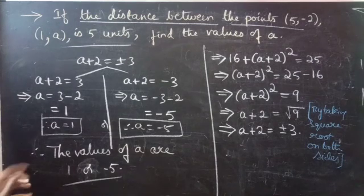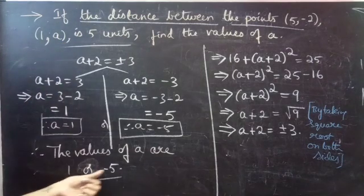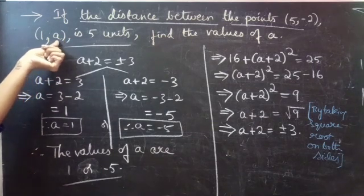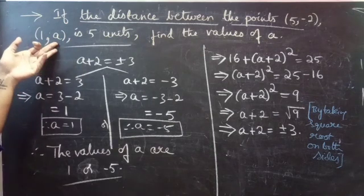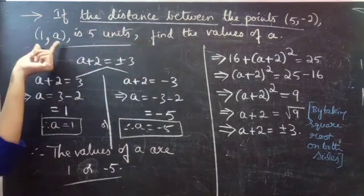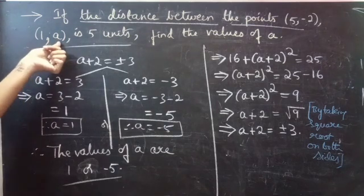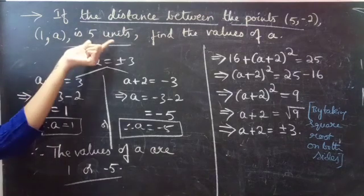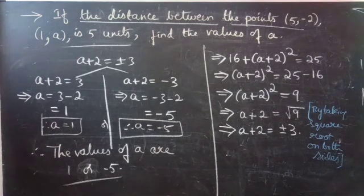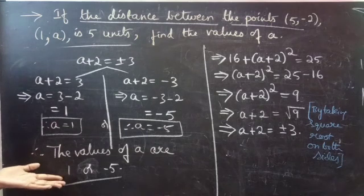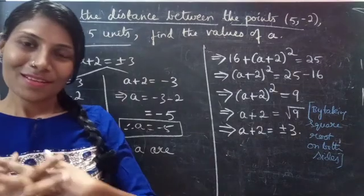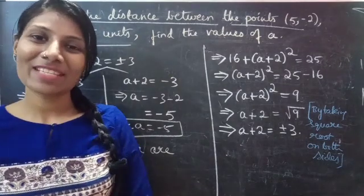If you want, you can check by substituting A equals 1 or A equals minus 5 into the second point, find the distance, and verify whether you get 5 units. This is where this problem completes. Hope you understand — see you in the next video, bye bye.